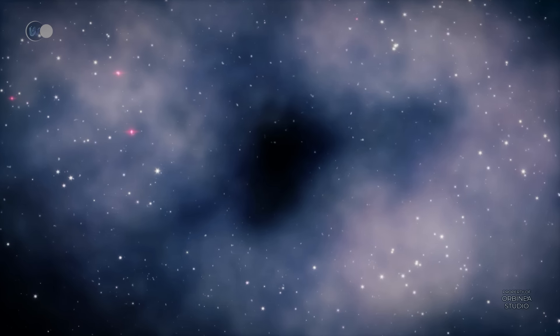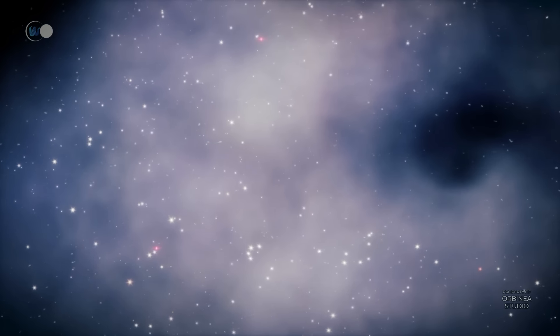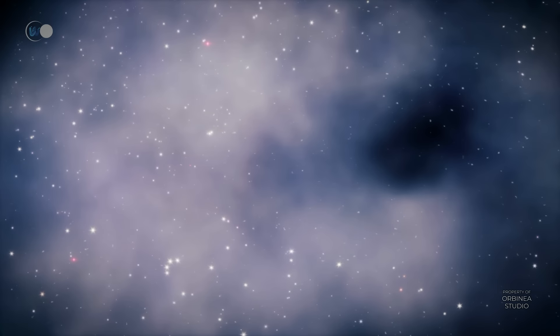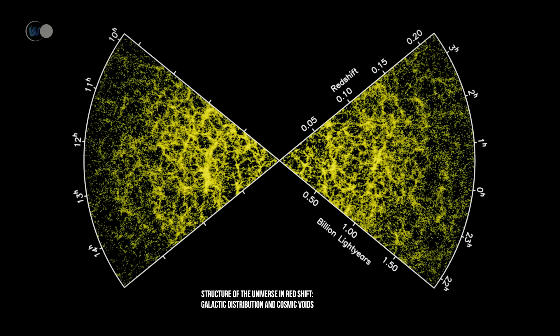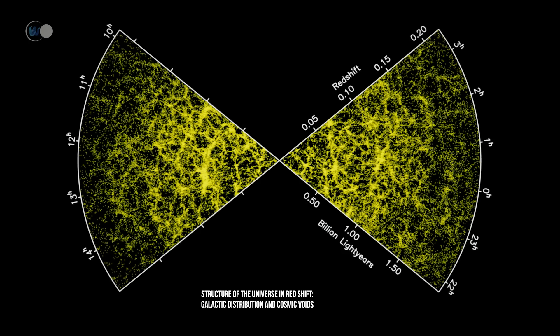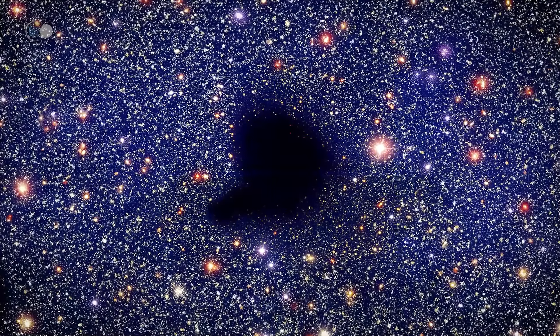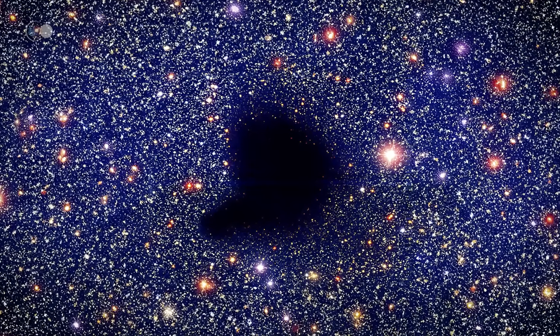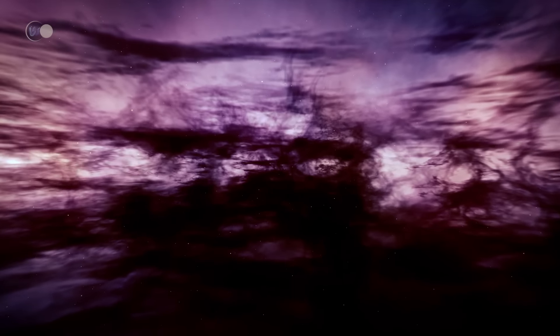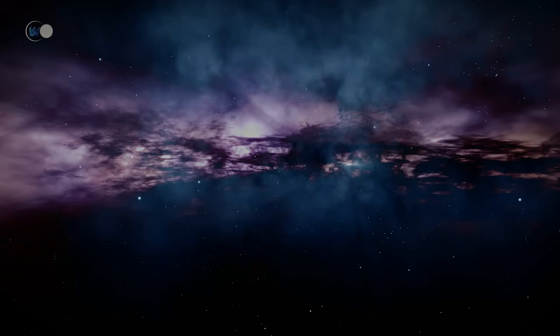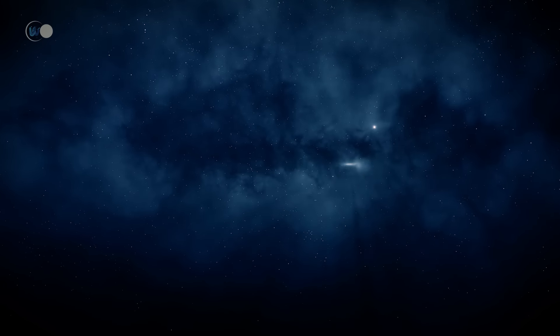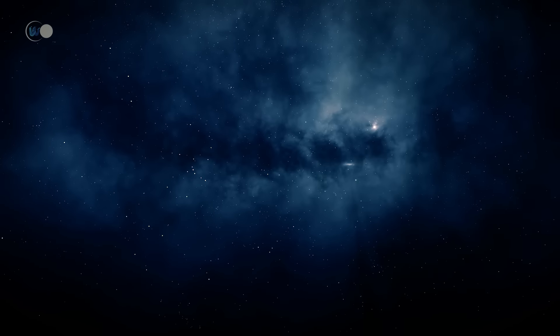Also known as the Great Void, the Boötes Void was discovered rather by chance — a team led by Harvard professor Robert Kirschner found it in 1981 during a survey of galaxy redshifts. In 1997, there were an estimated 60 galaxies in the Boötes Void. These galaxies are so isolated that they are spread across a volume almost two and a half times larger than that of the Virgo Supercluster, which contains over 10,000 galaxies. If the Milky Way were at the center of this void, we wouldn't have known other galaxies existed until the middle of the last century.